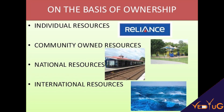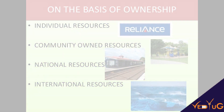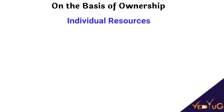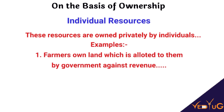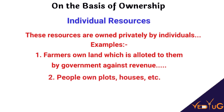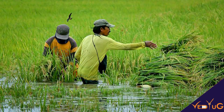On the basis of ownership, there are four types of resources: individual resources, community-owned resources, national resources, and international resources. Individual resources are owned by private individuals — like people own land and a house for themselves, and the farm given to farmers by the government is also included in individual resources.